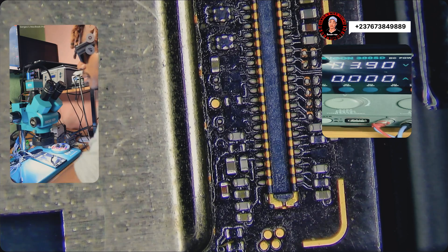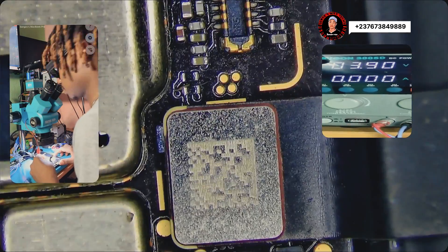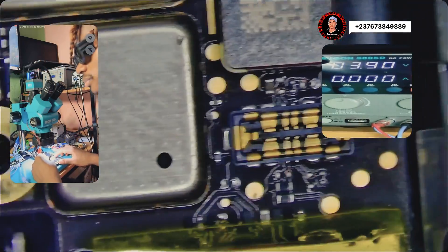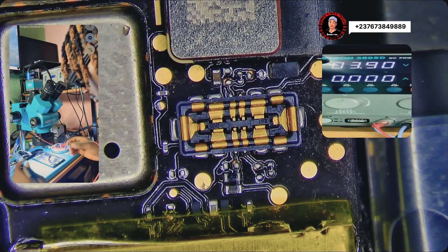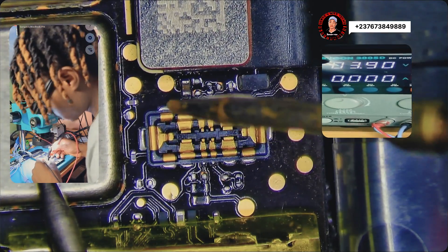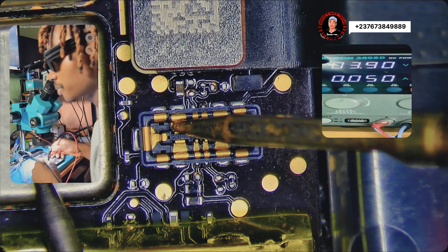We have this Google Pixel 6 Pro received from another shop with a power problem. I have my DC power supply screen there and the battery connector here. I want to inject 3.9 volts to the battery terminal to check.